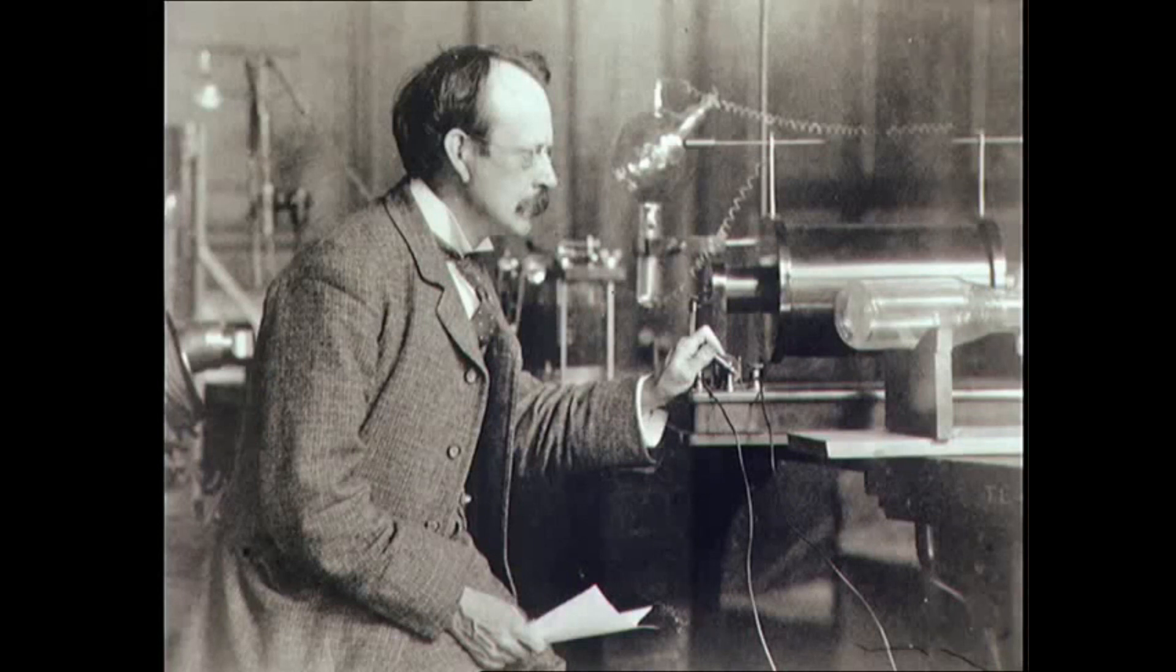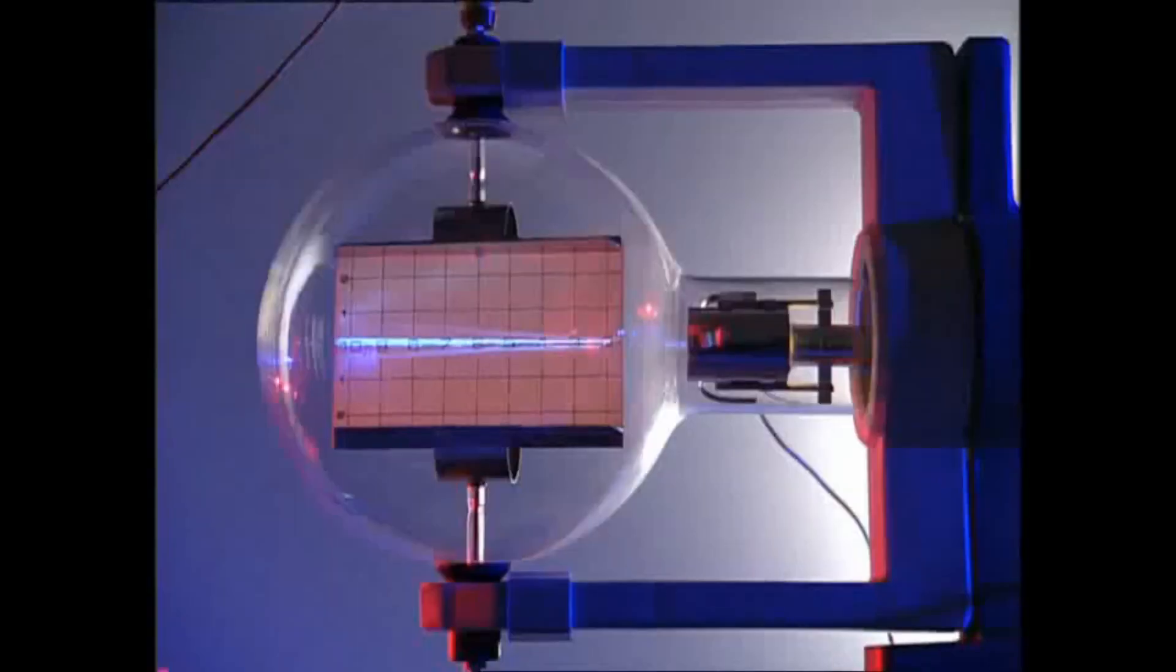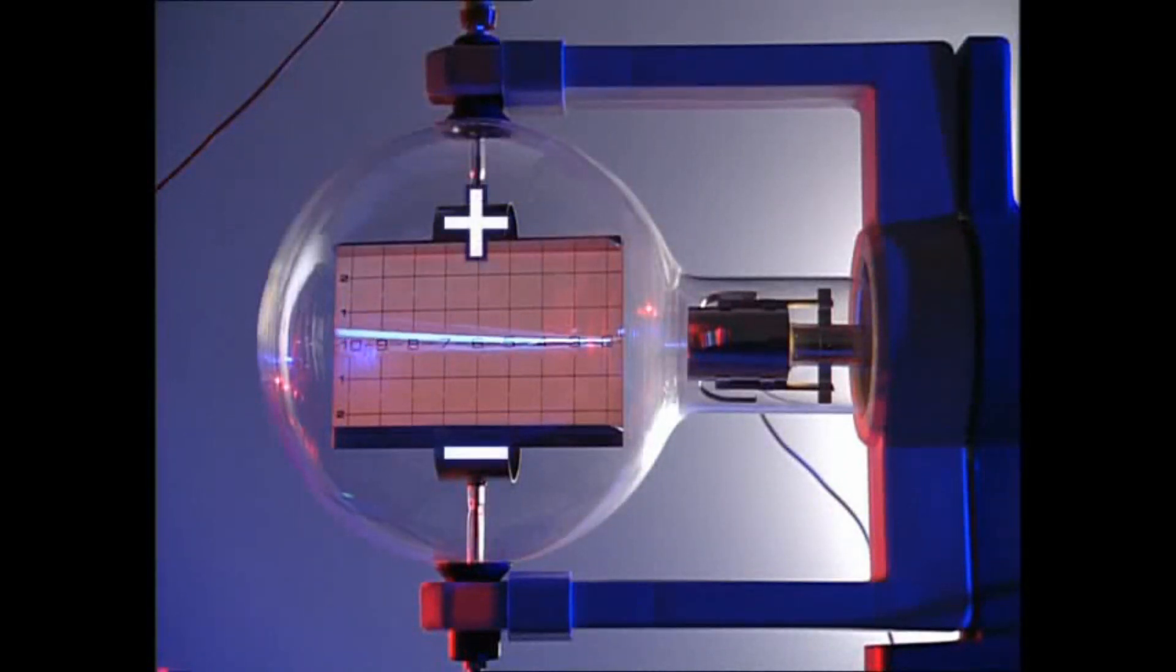Thompson was also the first to deflect these beams with an electric field. The screen sits between two horizontal charged plates. An electric field between the plates deflects the path of the beam upwards. The positive plate attracts these cathode rays. The negative plate repels.